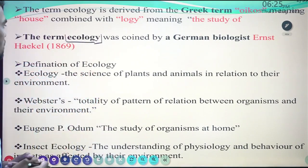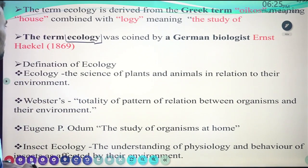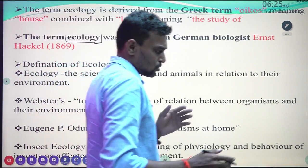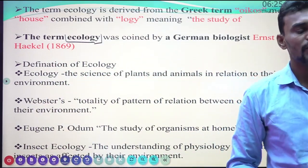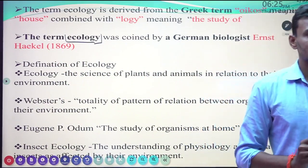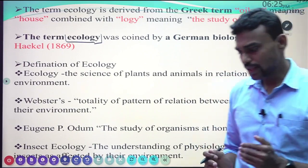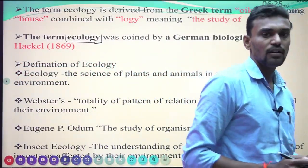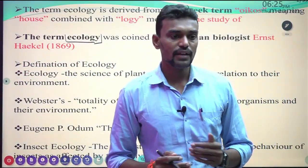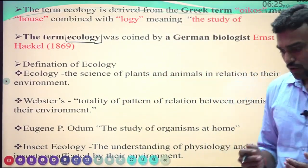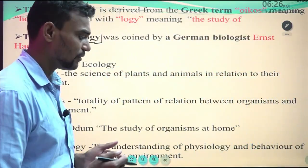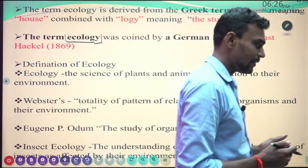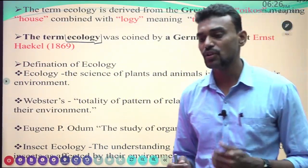The definition of ecology: it is the science of plants and animals in relation to their environment. This is a major important point. Ecology is totally and directly proportionally related to the environment, and many environmental factors directly affect various factors including insect growth and population dynamics.